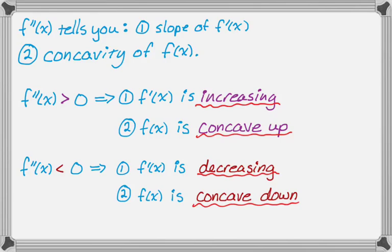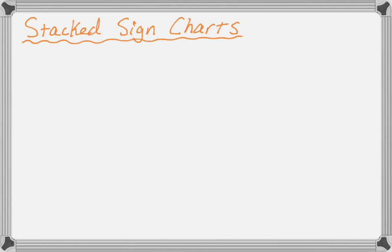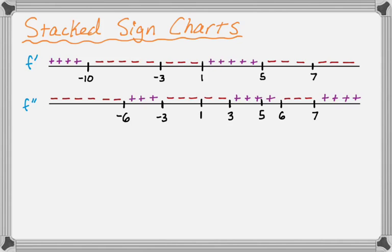So let's see what we can do with some stacked sign charts. So I went ahead and I made two of them, filled in all the pluses and minuses. We're assuming the function is continuous. So let's see what we can do. So first thing we want to do is we want to figure stuff out about f. So you focus in on each region. So I'm going to focus in on from negative infinity to negative 10 in this case, because that's the first region.